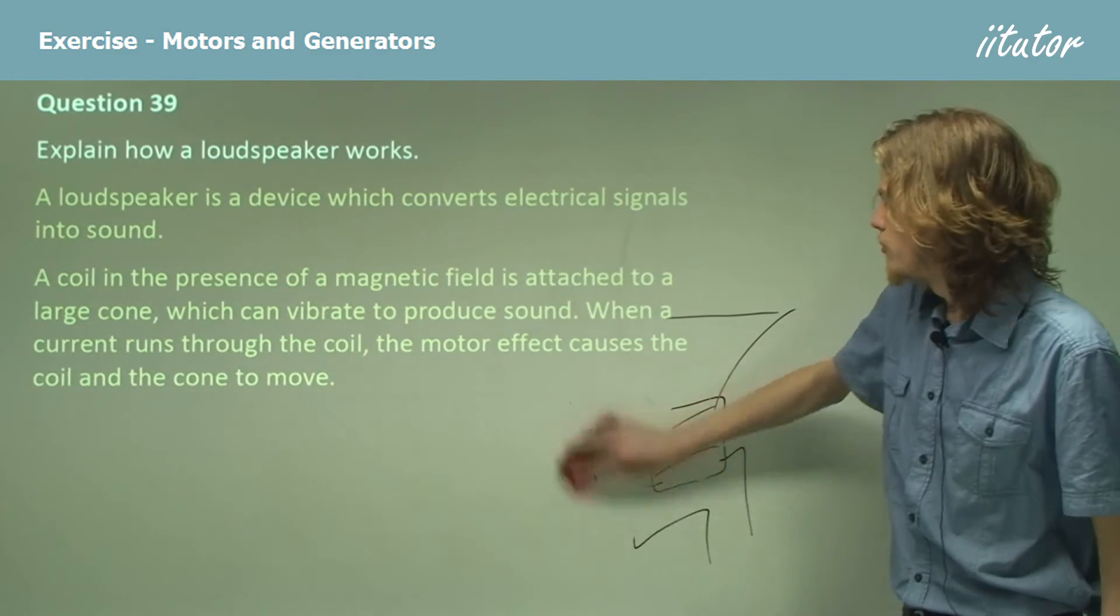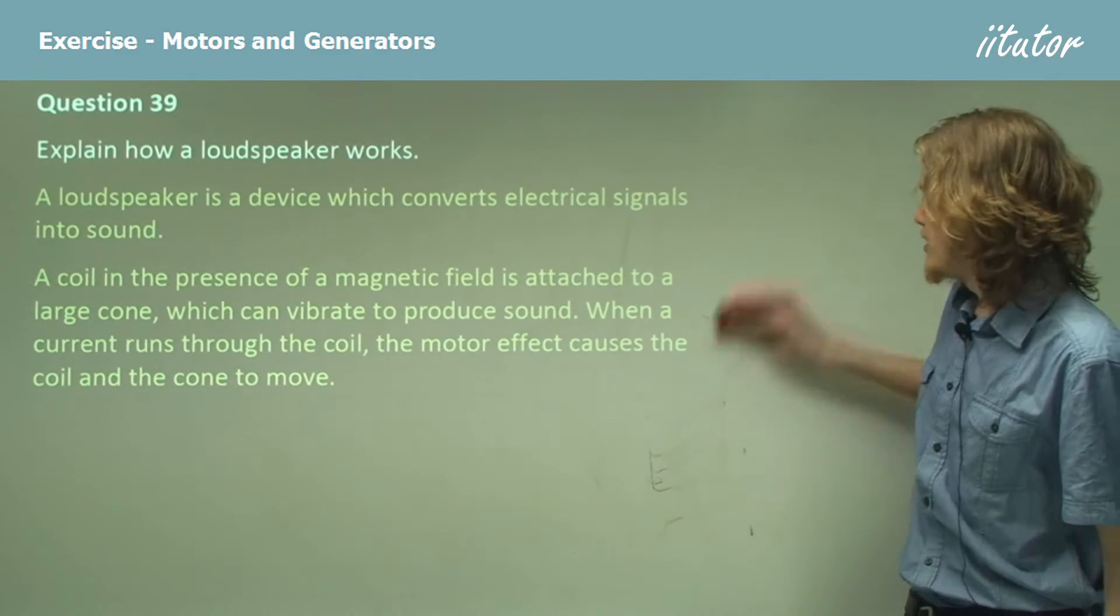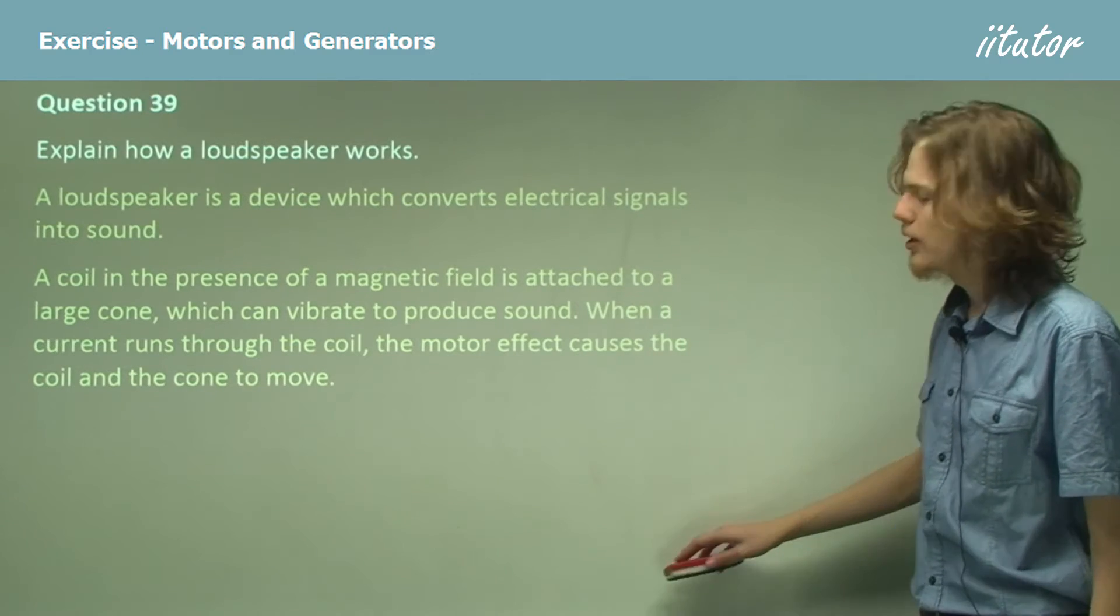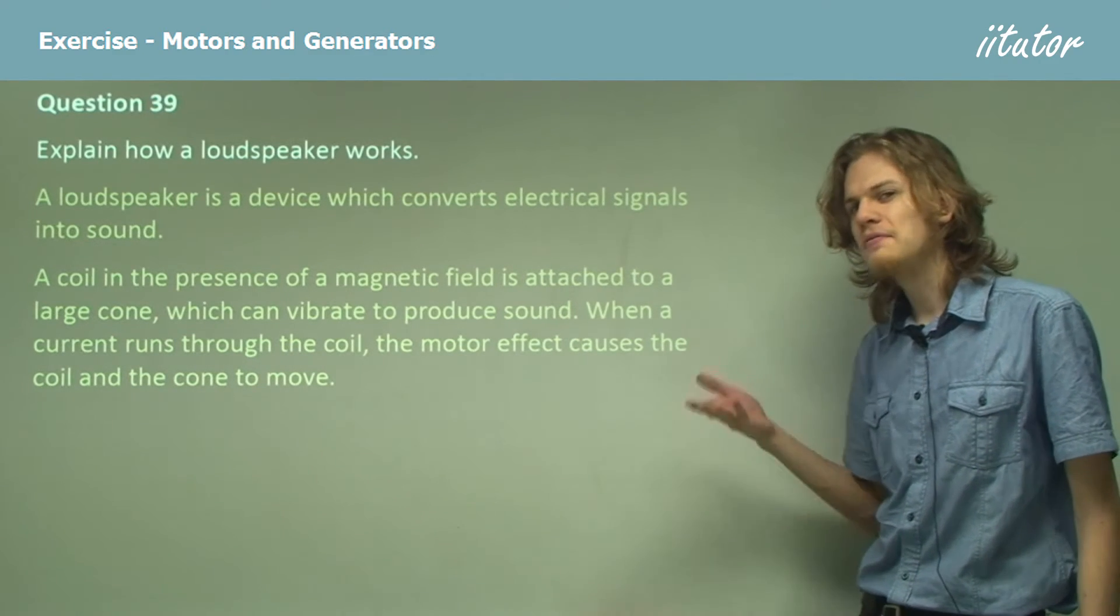So if we get a changing electric current in the coil, that's going to make the cone behave in different ways.